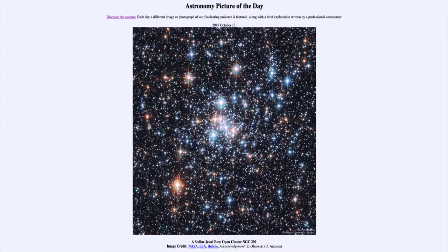And today's picture for October the 13th of 2019 is titled A Stellar Jewelbox Open Cluster NGC 290. So what do we see here? Well, this is an example of an open cluster of stars.